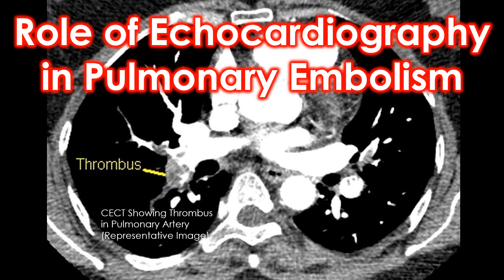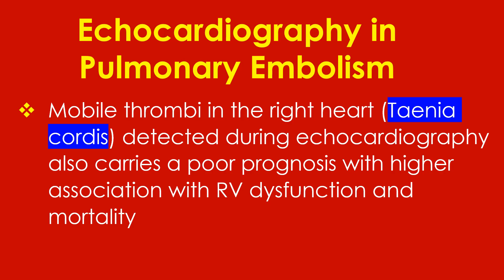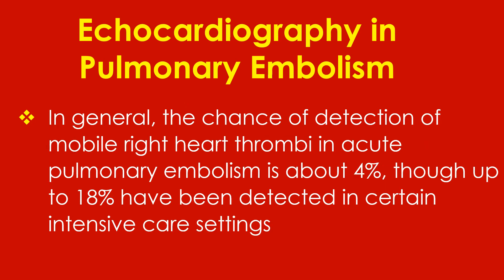Echocardiography in pulmonary embolism is useful in several ways. Visualization of thrombi within the right heart or pulmonary arteries would be the most direct way of diagnosing acute pulmonary embolism by echocardiography. Mobile thrombi in the right heart, known as tenia cordis, detected during echocardiography carry a poor prognosis with higher association with right ventricular dysfunction and mortality. The chance of detection of mobile right heart thrombi in acute pulmonary embolism is about 4%, though up to 18% have been detected in certain intensive care settings.